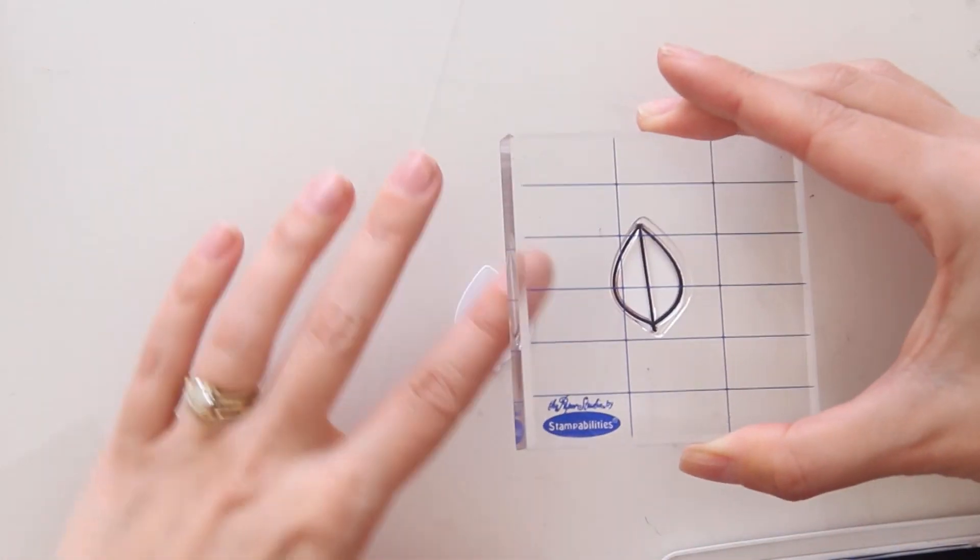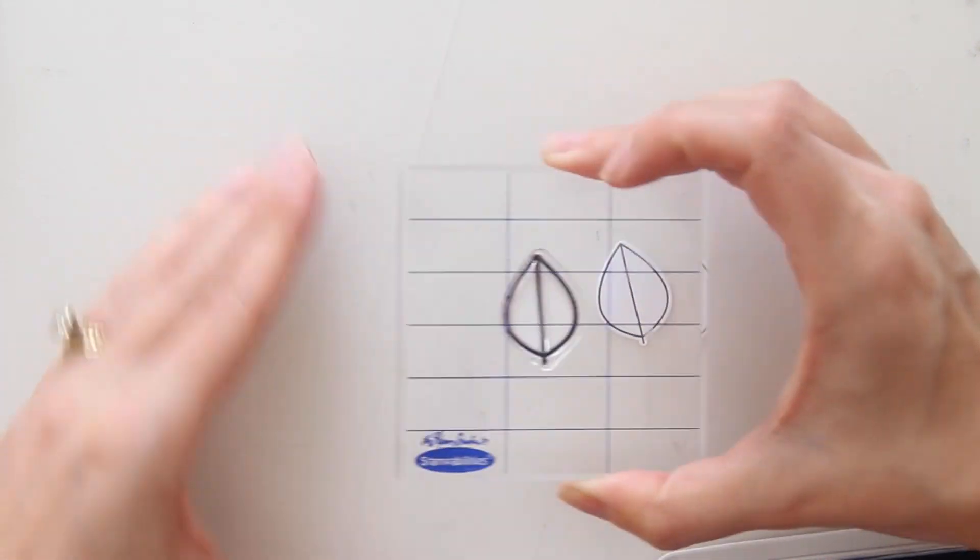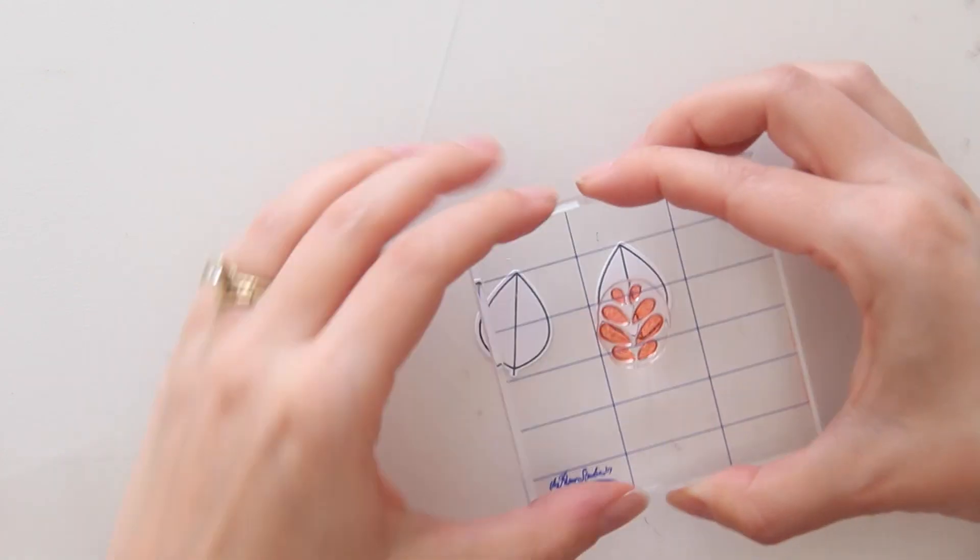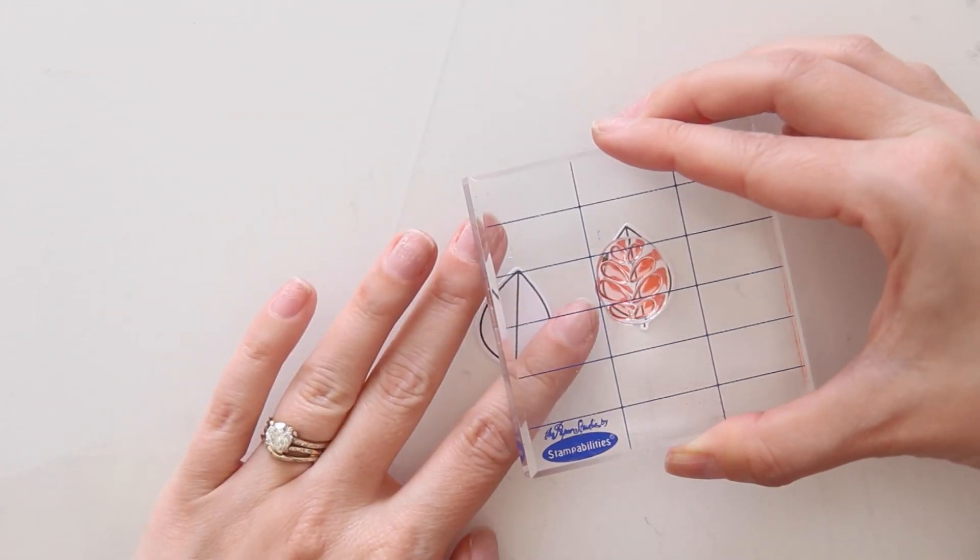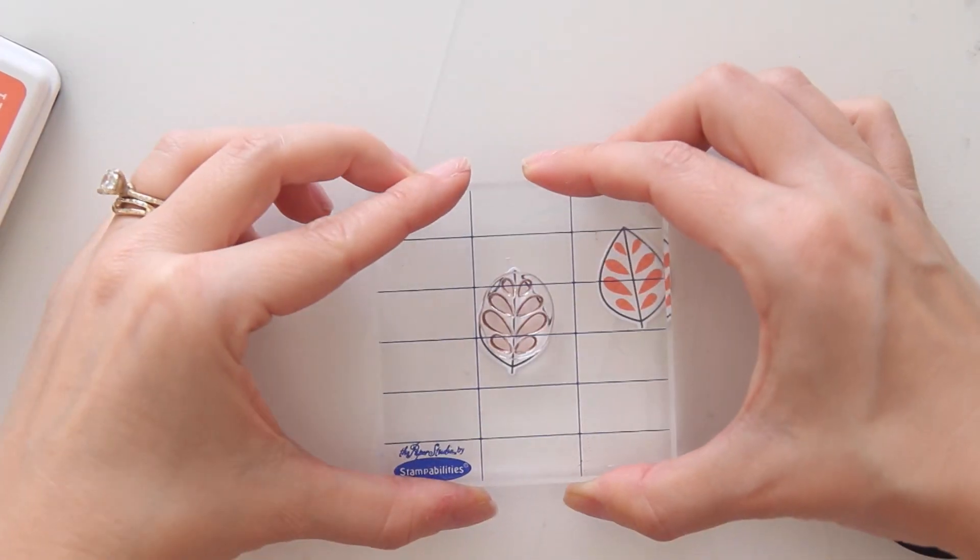Now, taking the shorter leaves in the stamp set, and these come with the full outline as well as the stem. Just stamping those down, doing one in fresh peach, and I'm going to stamp the other one down in blue.